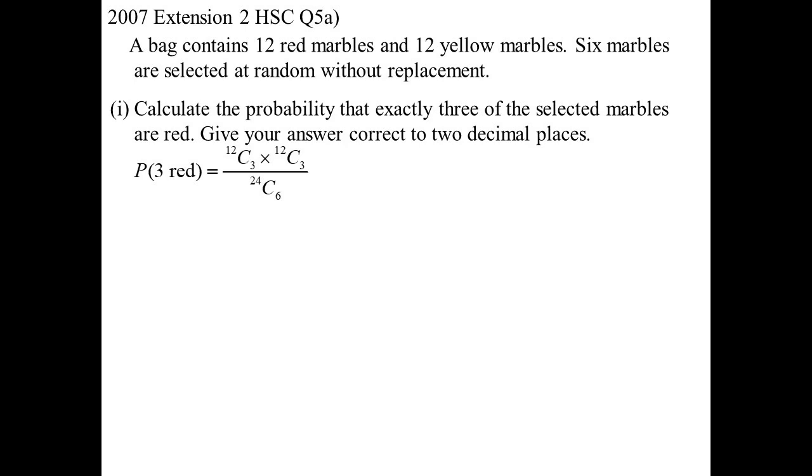But this is a combination, not a permutation. We don't care the order that we pull these marbles out. We're just getting the marbles. So 24C6. Then on the top of the fraction, we want three red marbles. So three from 12, 12C3, which means we must be getting three yellow ones as well. So 12C3 on the top as well. So two decimal places, 0.36.